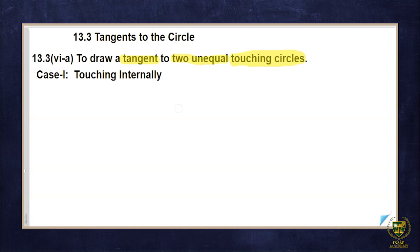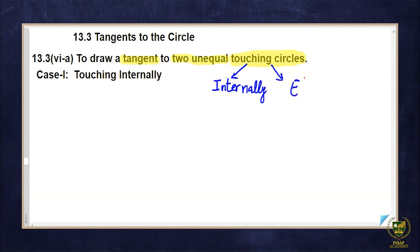When we talk about touching circles, as I mentioned, we will have two cases. So what are those two cases — what are the possibilities here? One is that they can touch internally, and the second possibility is that they can touch externally. So using these two concepts, we will make two cases here.